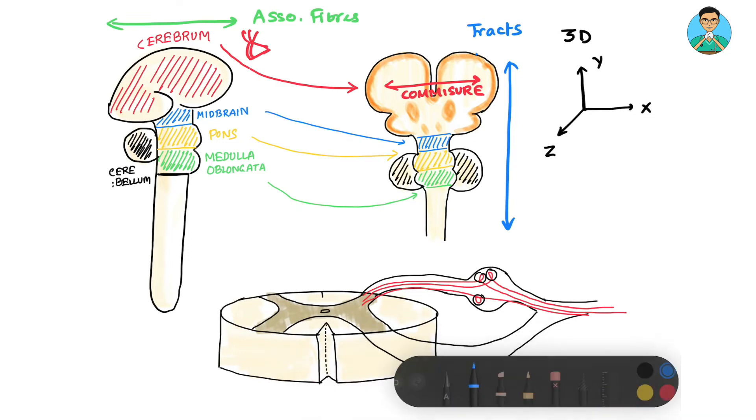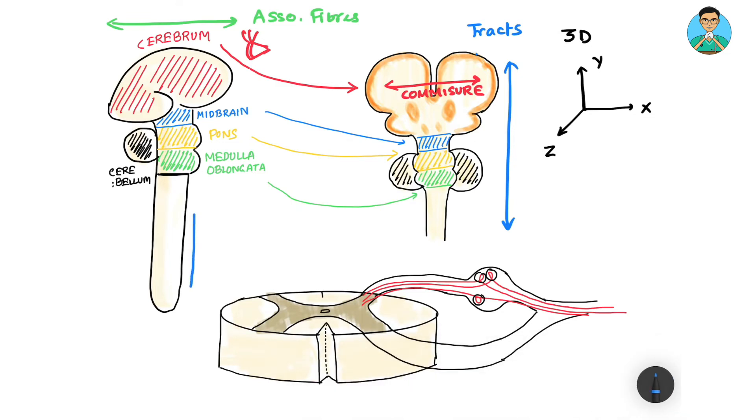The tracts that go up from the spinal cord towards the brain are known as ascending tracts, and the tracts that come down are known as descending tracts.